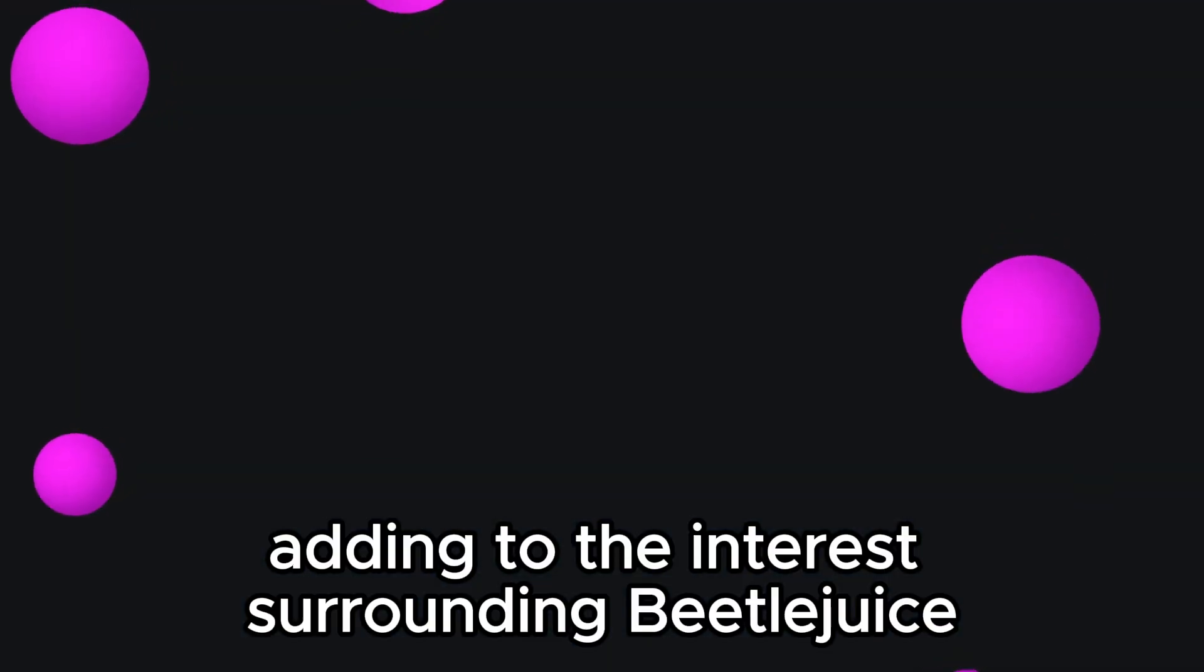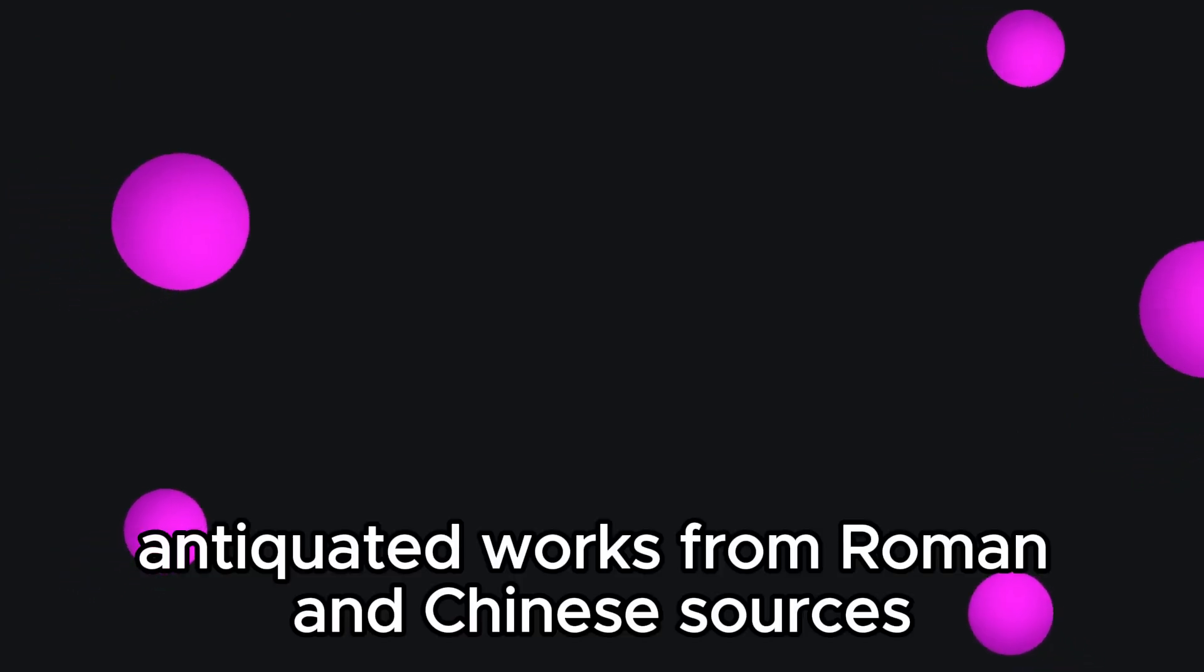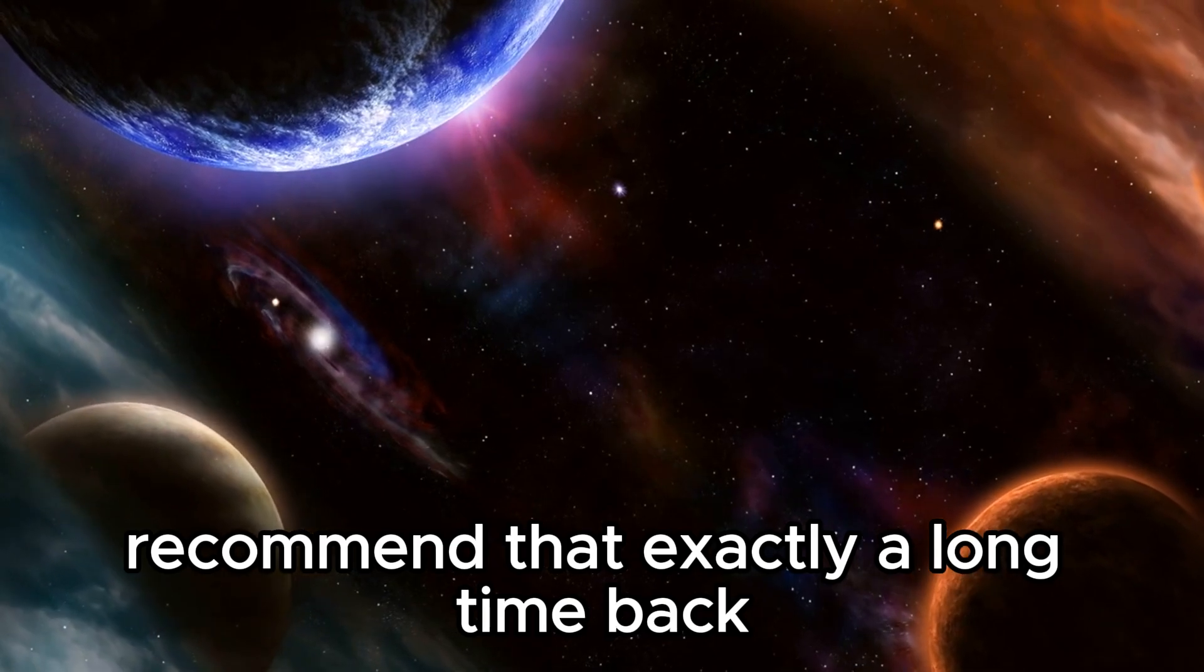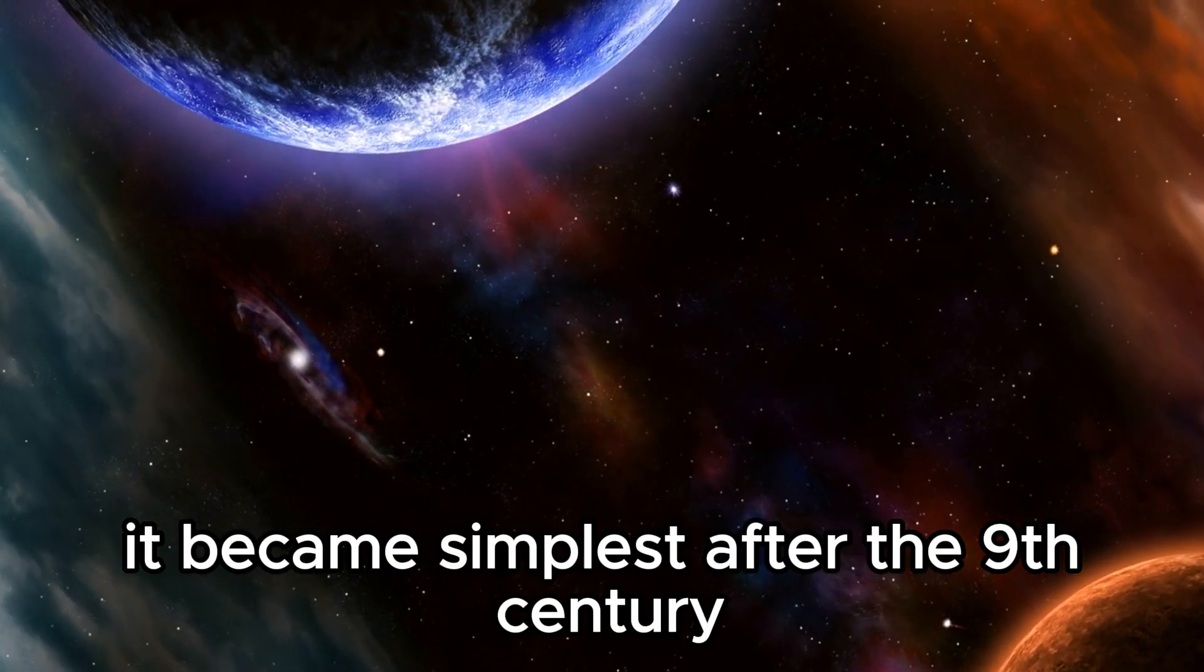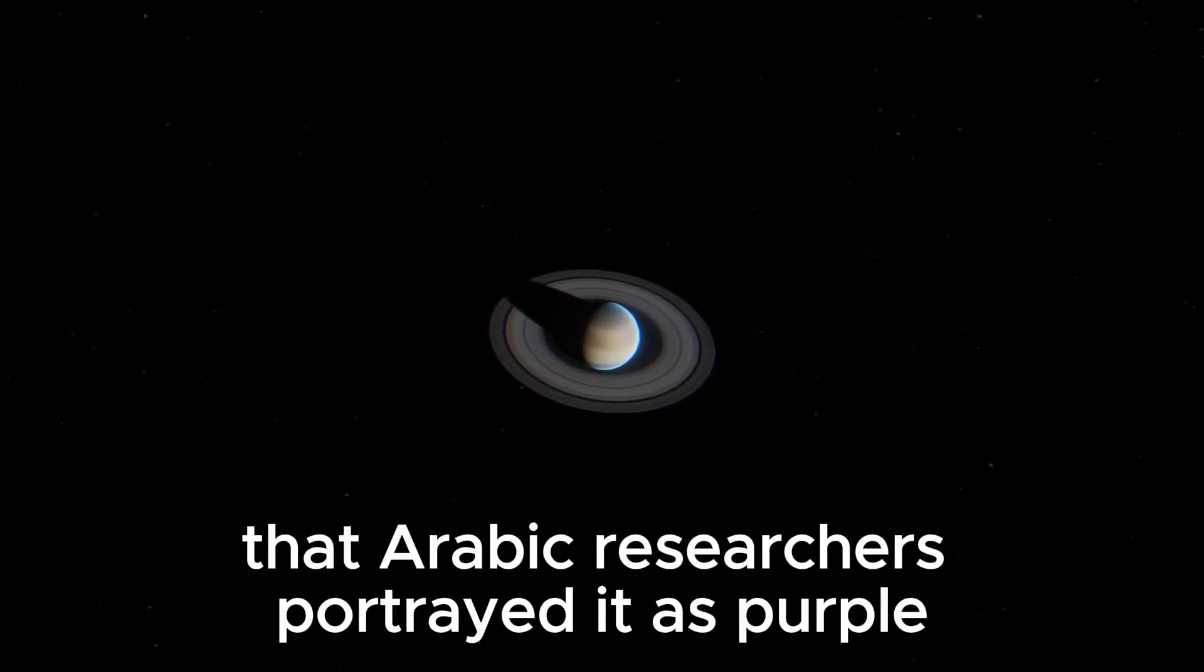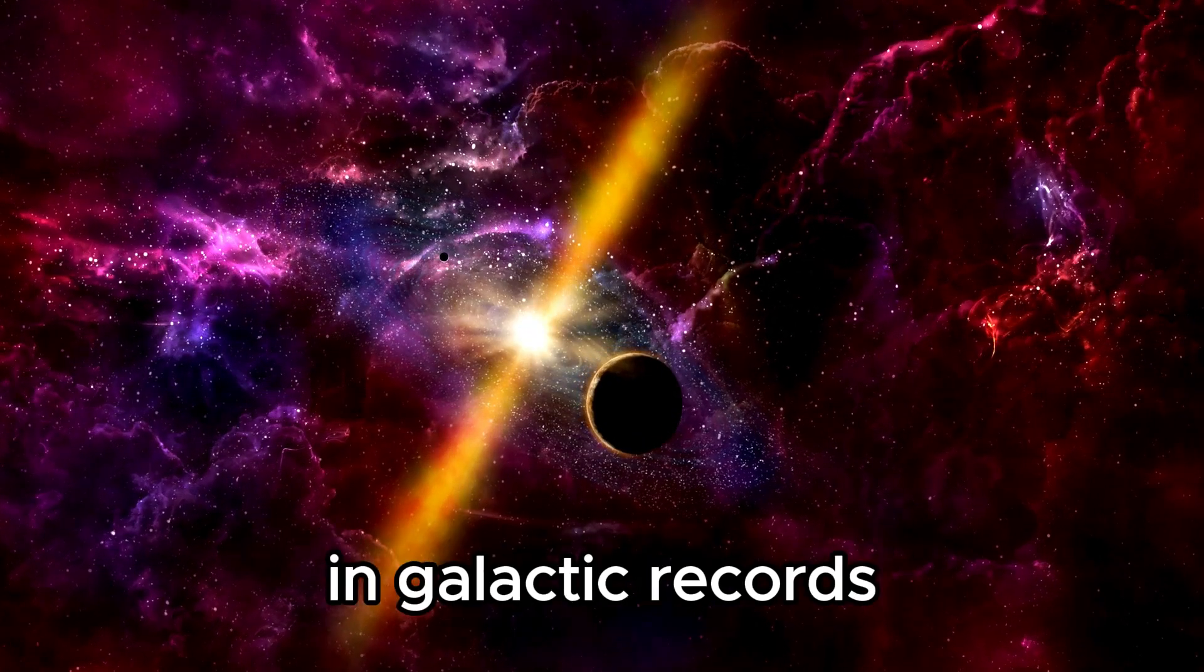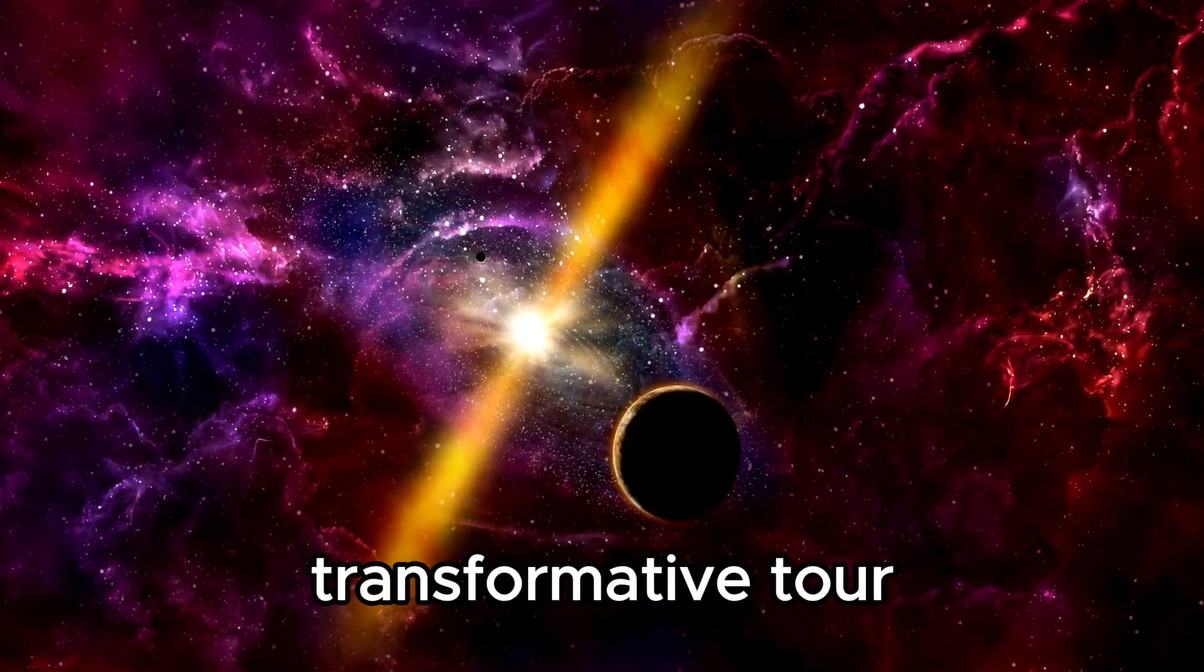Adding to the interest surrounding Beetlejuice is its captivating variety history. Antiquated works from Roman and Chinese sources recommend that exactly a long time back, Beetlejuice appeared yellow. It became simplest after the 9th century that Arabic researchers portrayed it as purple. This authentic exchange in range fills in as a hint to the celebrity's transformational tour.